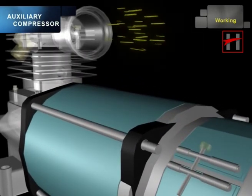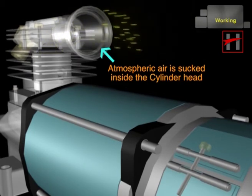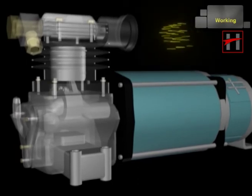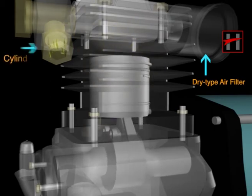atmospheric air is sucked inside the cylinder head, where it is cleaned by dry type air filter and is compressed inside the cylinder.